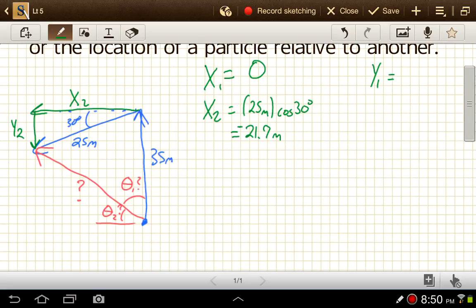For our first vector, the y1 is just going to be the whole vector. It's all in the y direction, so this is 35 meters. And y2, that's going to be this distance right here, which is opposite from the angle.